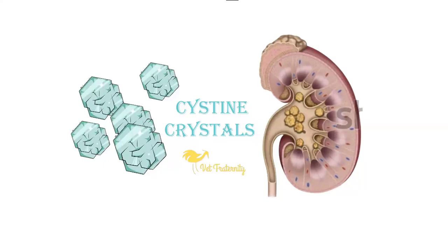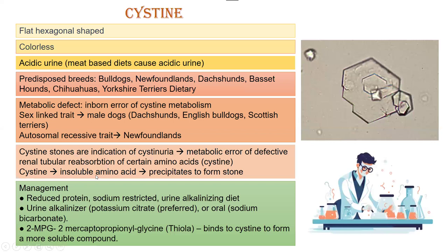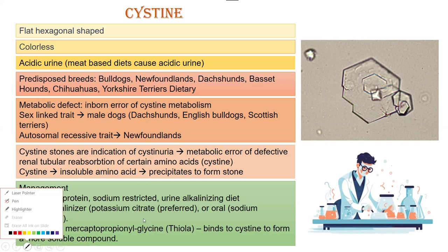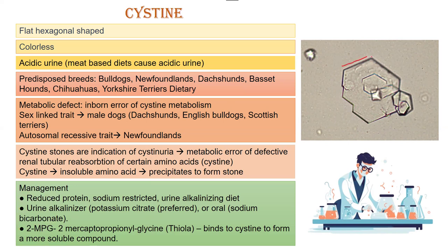In this video we are going to talk about cysteine crystals — these are my favorite crystals. Cysteine crystals are basically flat and hexagonal shaped. As you can see in this picture, these crystals have six sides, so it's a hexagonal one — two, three, four, five, and six. They are colorless, as is also evident from this picture.